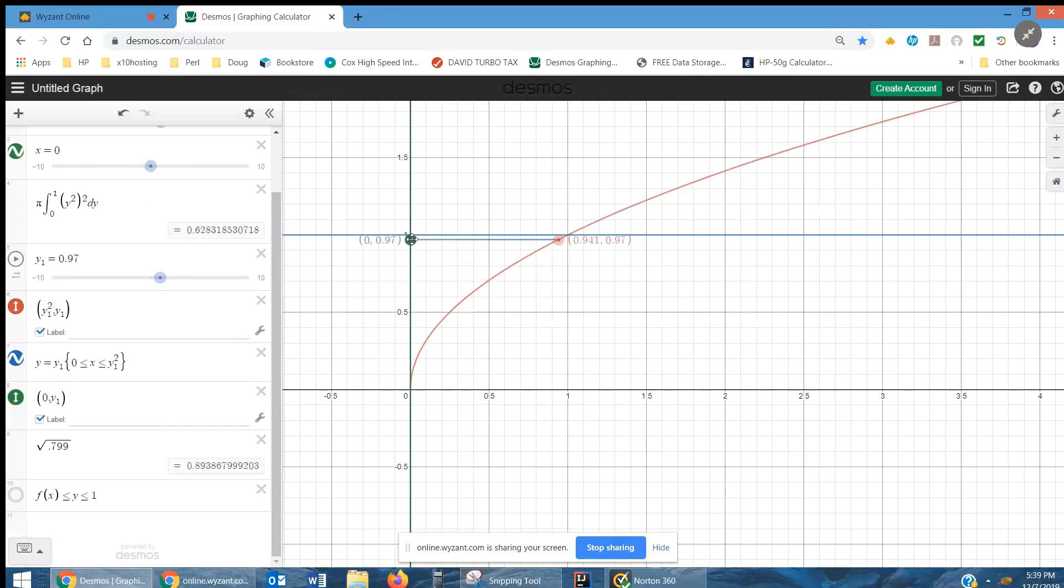We're essentially piling up these washers as we move from 0 to 1. That's what we mean by finding the definite integral from 0 to 1. Hope that helps you set up the definite integral for this problem.